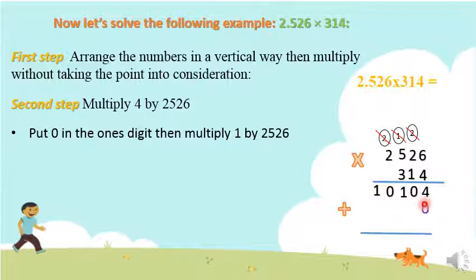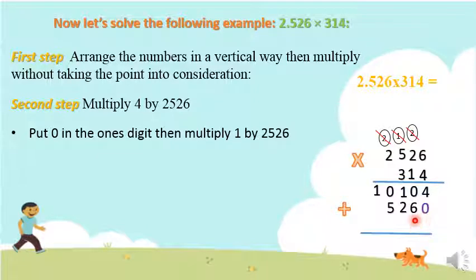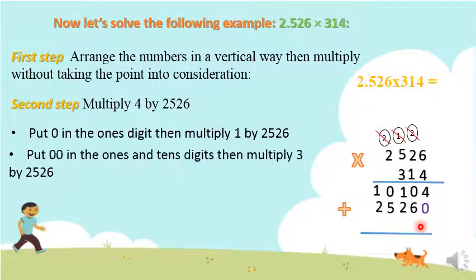1 times 6 is 6. 1 times 2 is 2. 1 times 5 is 5. 1 times 2 is 2. We finish the tens. Now we want to move to the hundreds, so we put two zeros under the ones and tens, or leave two empty digits. Now multiply 3 by the first number.